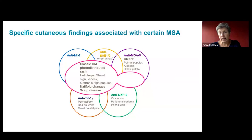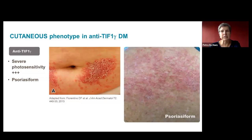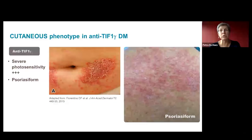In TIF-1 gamma patients, photosensitivity — present to some degree in all dermatomyositis — is generally severe. Even minimal sun exposure can reactivate their skin disease. Additionally, some TIF-1 gamma patients have lesions resembling psoriasis, and we have had patients who received a psoriasis diagnosis for quite some time before the correct diagnosis of dermatomyositis was established.